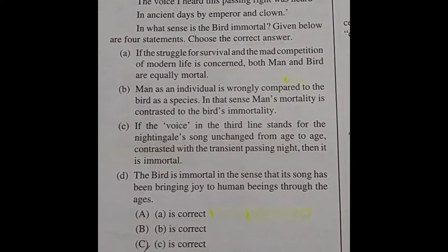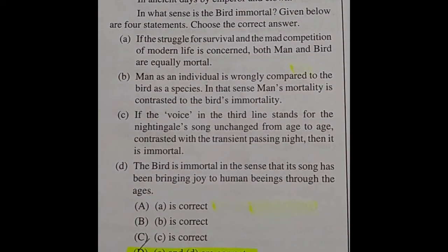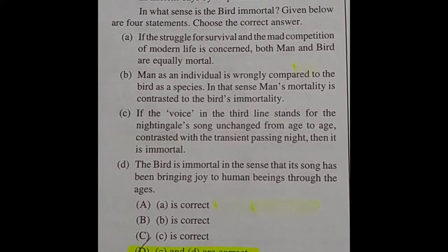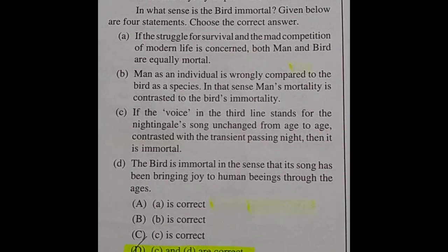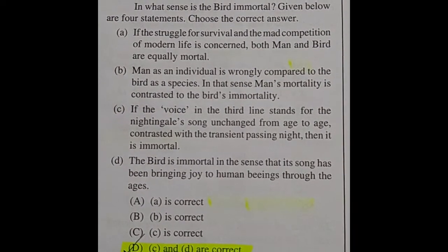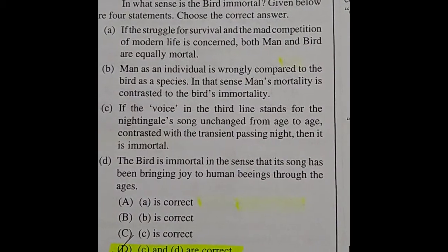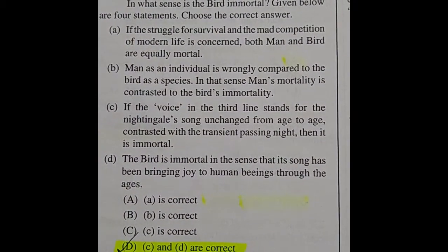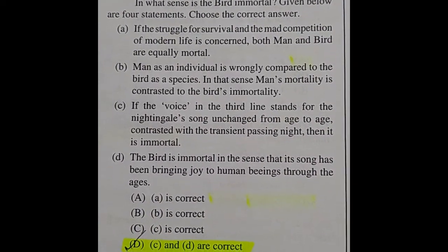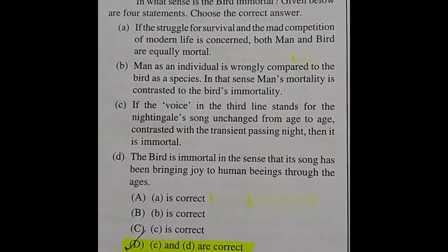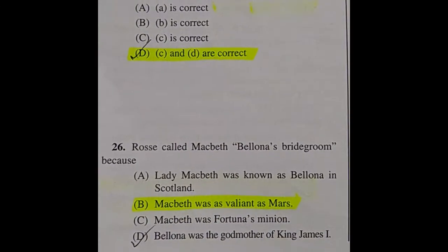Question 25: 'Thou wast not born for death, immortal Bird! No hungry generations tread thee down; The voice I heard this passing night was heard in ancient days by emperor and clown.' In what sense is the bird immortal? The correct answer is option D — both C and D are correct: if the voice in the third line stands for the nightingale's song, unchanged from age to age, then it is immortal; and the bird is immortal in the sense that its song has been bringing joy to human beings through the ages.